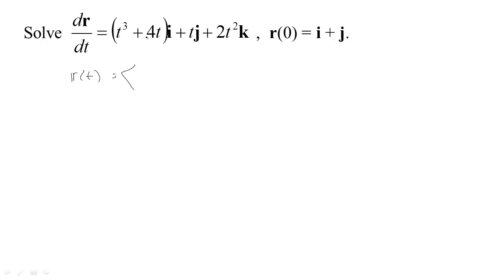Let's see, our first component is t cubed plus 4t, so the antiderivative would be 1 fourth t to the fourth plus 2t squared plus some constant, I'll call it c1. The antiderivative of t would be 1 half t squared plus some constant, and the antiderivative of 2t squared would be 2 thirds t cubed plus some constant.